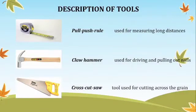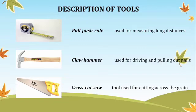The description of tools. Pull-push rule — used for measuring long distances. Next, claw hammer — used for driving and pulling out nails. Next is cross-cut saw — a tool used for cutting across the grain. A cross-cut saw is a specialized hand saw for manually cutting wood across the grain.